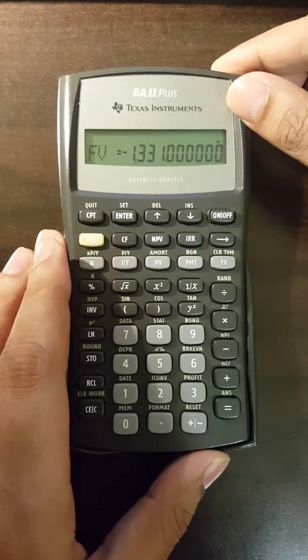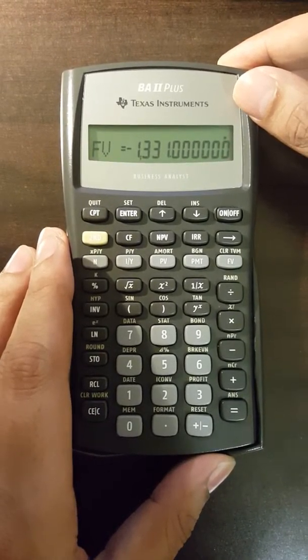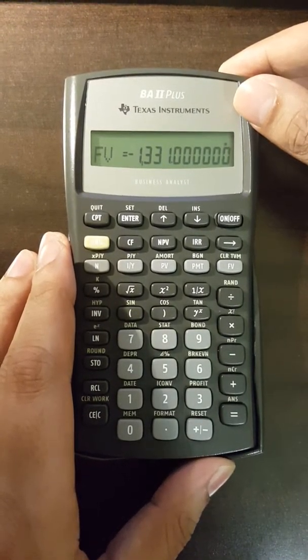And N is 3 here as this cash flow occurs at the end of year one. And we need to find future value at the end of fourth year. So there is a gap of three years between these two events.